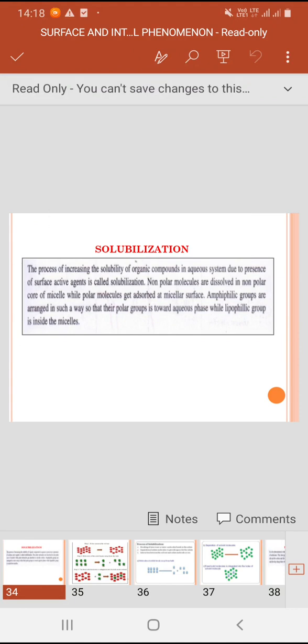Now solubilization. What is solubilization? It is a process of increasing the solubility of organic compounds in aqueous system due to presence of surface active agents. Means solubilization is a process by which we increase the solubility of any organic compound in the aqueous system in the presence of surface active agents.